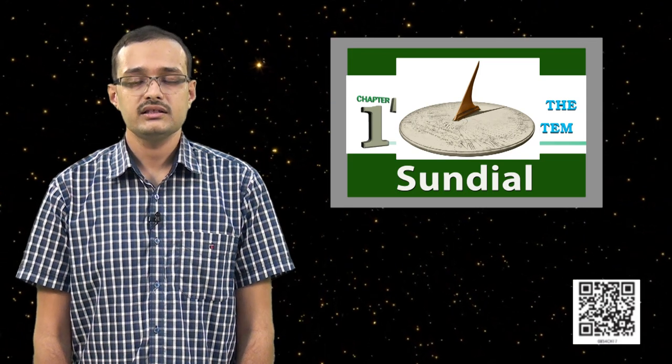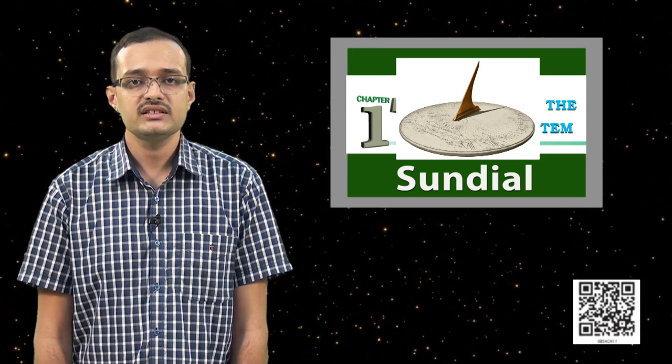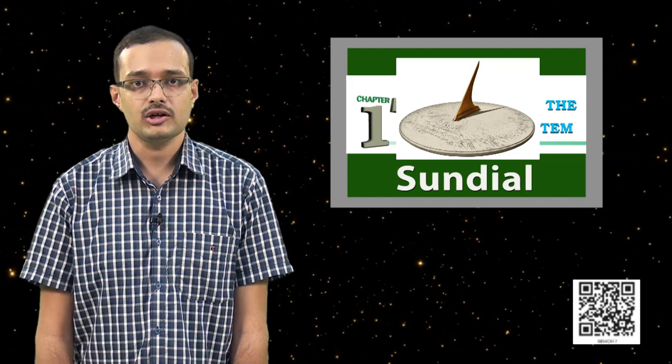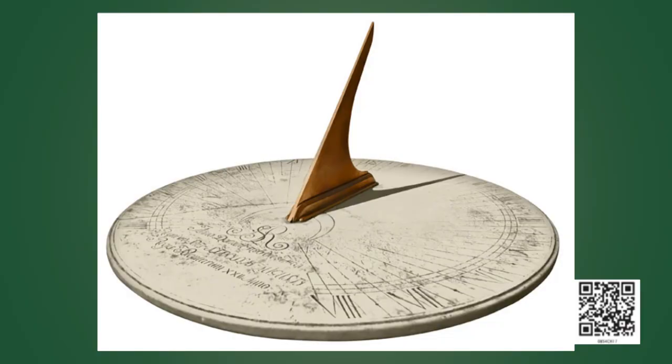The ancient astronomers used only basic instruments like the sundial to make their observations. The sundial consisted of a vertical rod attached to a horizontal plate. Using this sundial, they could measure the latitude of the place where they were observing and also the time when they were observing.